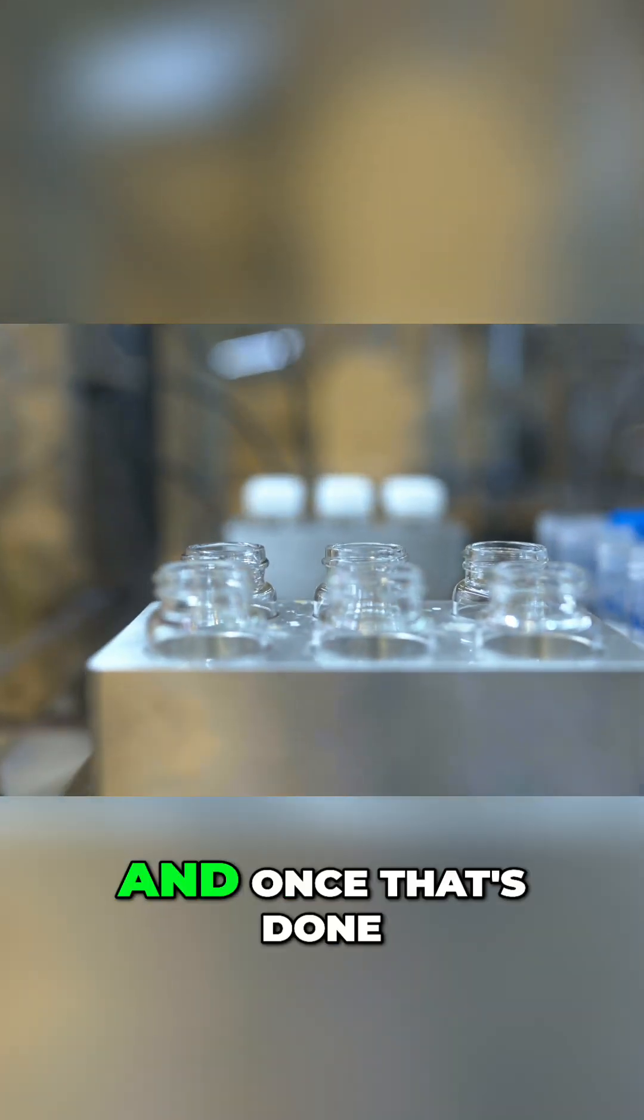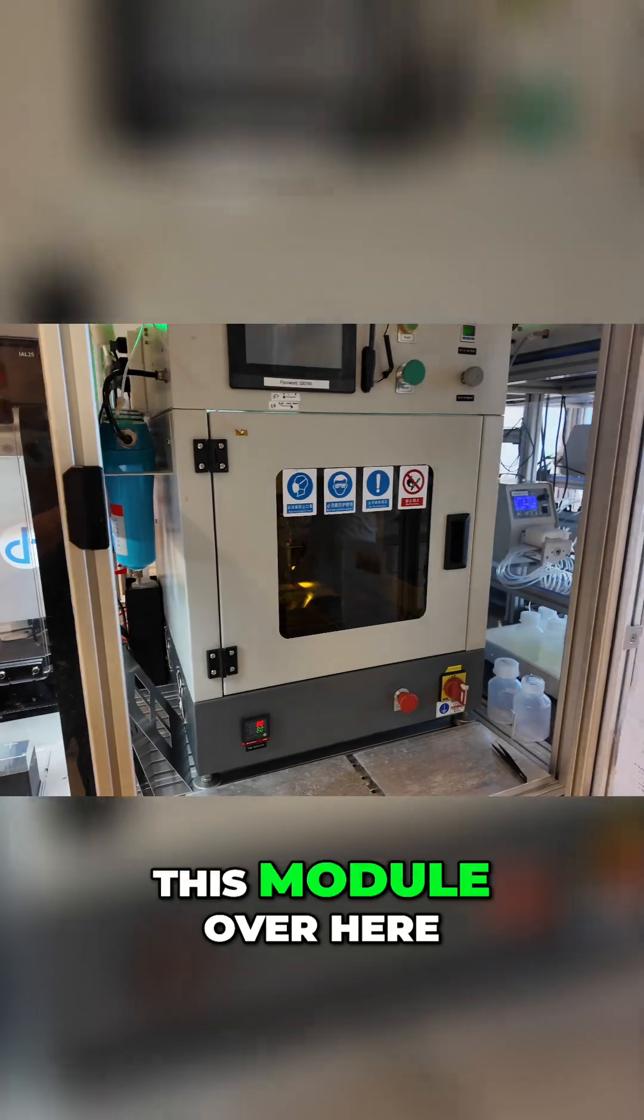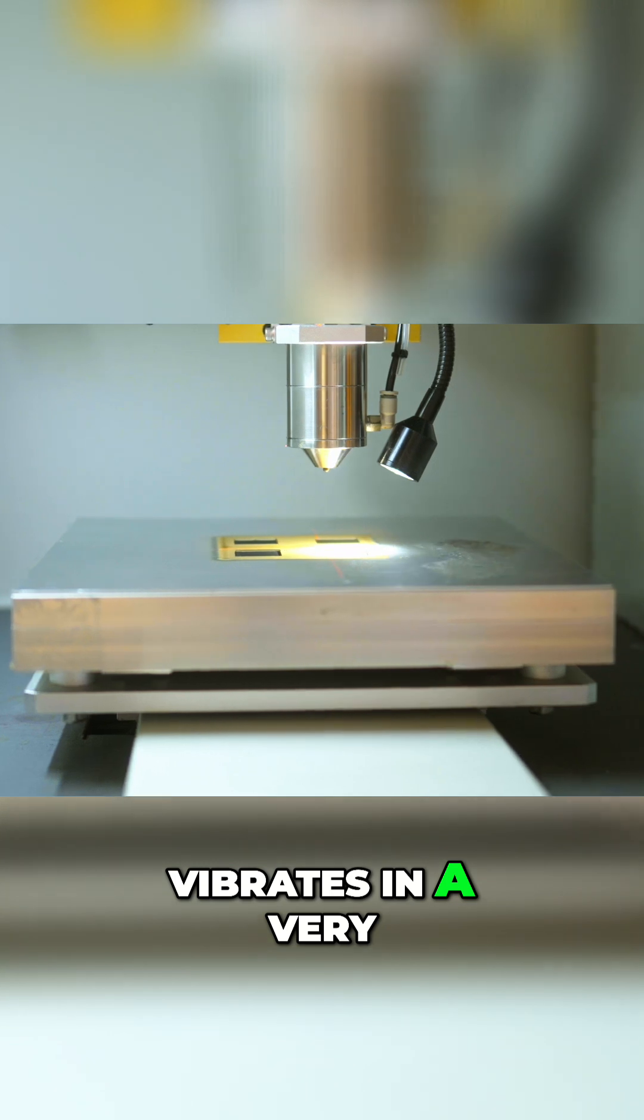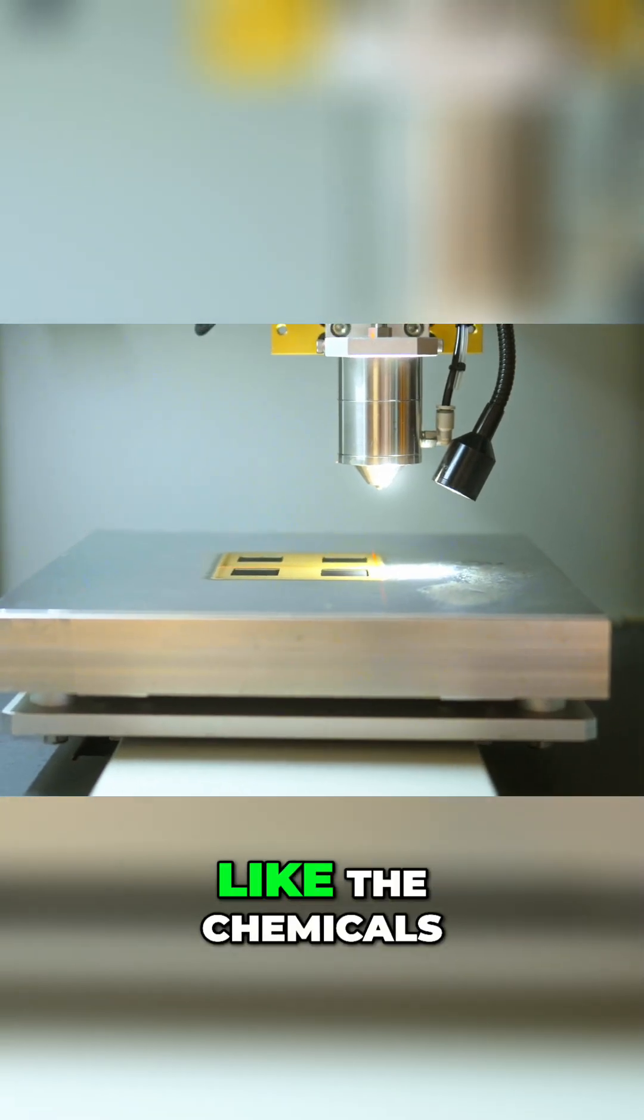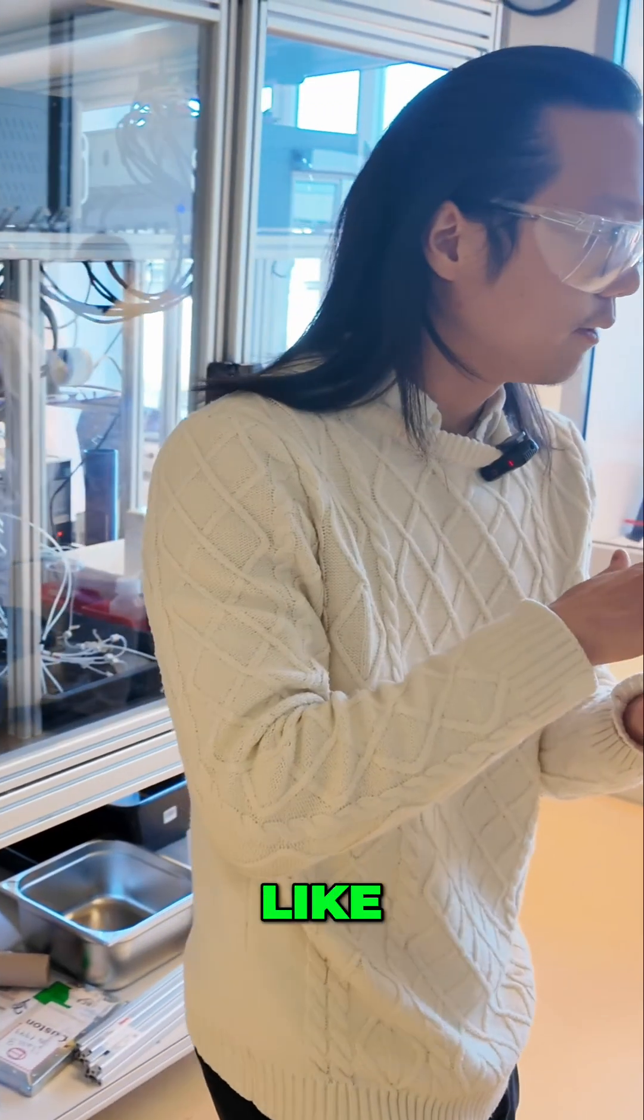So you cook the chemistry and once that's done, it gets transferred into this module over here. If you go inside, you see a nausus over there. And what the nausus does is it vibrates at a very high frequency and disperses the chemicals to coat it onto the support itself.